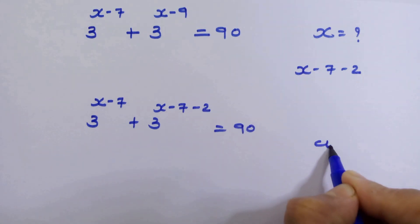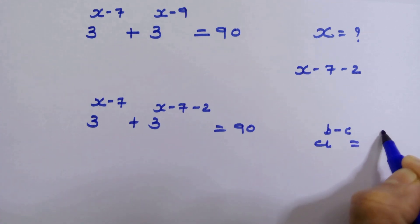Now check this rule. If a raised to b minus c, then we can write it as a raised to b upon a raised to c.